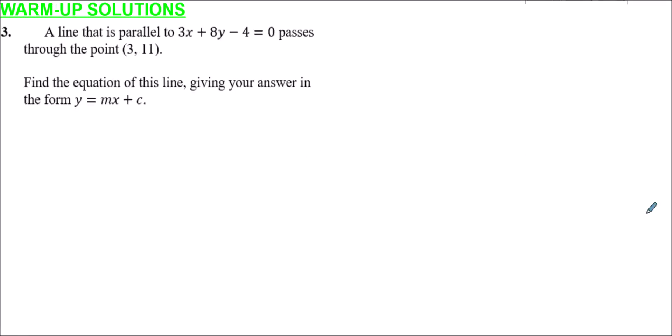Question three: a line is parallel to 3x + 8y − 4 = 0 and passes through the point (3, 11). Find the equation of the parallel line in the form y = mx + c. The line we want is not the one given — it's parallel to it. First, let's rearrange 3x + 8y − 4 = 0 to find its gradient.